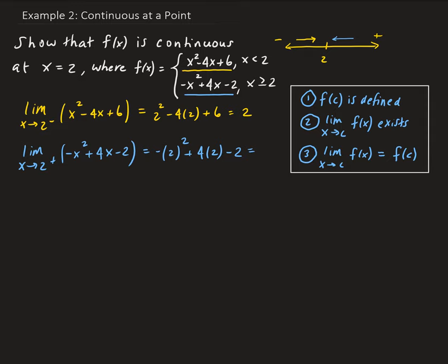This gives us a value of 2. Because we have minus 4 plus 8, that gives us 4, and 4 minus 2 is 2. So this shows us that the overall limit exists — both one-sided limits are equal. The limit of our piecewise function as x approaches 2 is equal to 2.